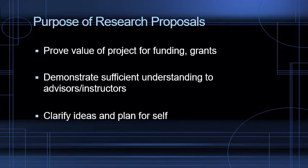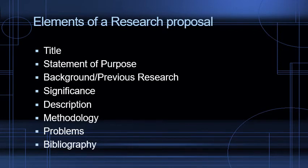There are a lot of elements of a research proposal, and these may vary depending on your discipline — scientists have a certain emphasis versus social scientists versus humanities researchers. But some of the main elements — and we're just talking about the statement of purpose in this video — include: the title, your statement of purpose, discussion of the background or previous research, discussion of the significance of your research, description of how you're actually going to be undertaking it, methodology — any particular theories or algorithms you're applying to your research — problems you might face, challenges in the research, and ultimately a bibliography of sources you've already found and plan to research.